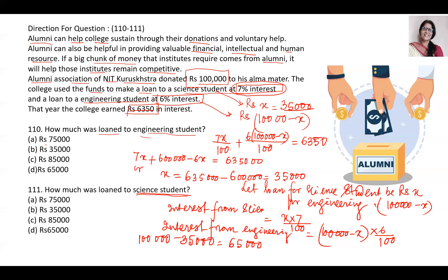So, for science it was Rs. 35,000 and for engineering it is Rs. 65,000. The answer to the engineering loan question is Rs. 65,000, and the answer to the science loan question is Rs. 35,000. The total is 1 lakh. You may also take engineering as x, but then it will be 1 lakh minus x — it remains the same. So this problem can be solved in one variable. Thank you for watching and thank you for subscribing to my channel. I hope you understood. See you in another video. Thank you.